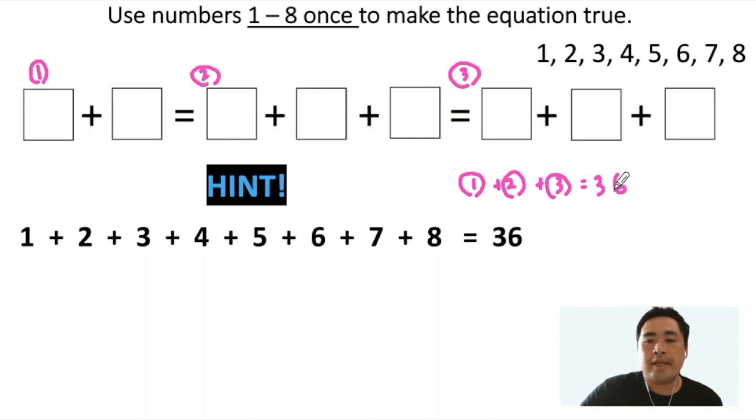That means that we can take the 36 and divide it by three to get 12. We now know that each group's total must equal 12.